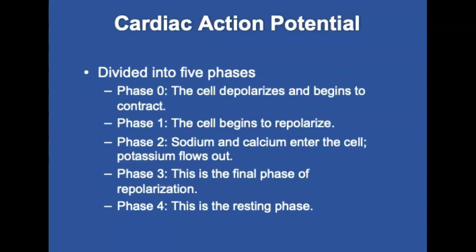Let's talk about the cardiac action potential. The action potential of a typical myocardial cell can be divided into five phases, Phase 0 to Phase 4. Phase 0 begins when the cardiac muscle cell receives an impulse. Sodium moves into the cell through sodium channels, causing the interior of the cell to become electrically positive relative to its exterior. This results in a change in the transmembrane potential from negative 90 to about negative 70.